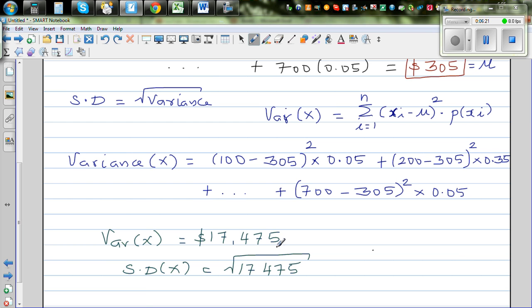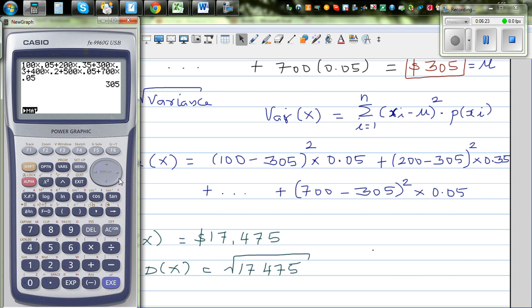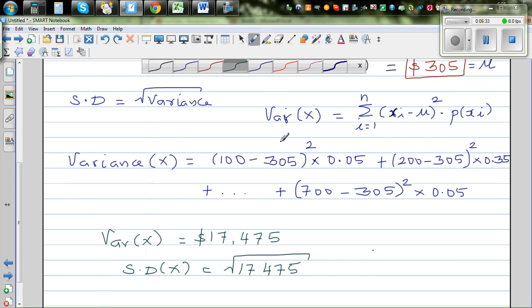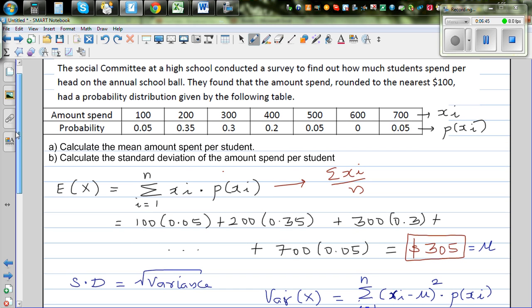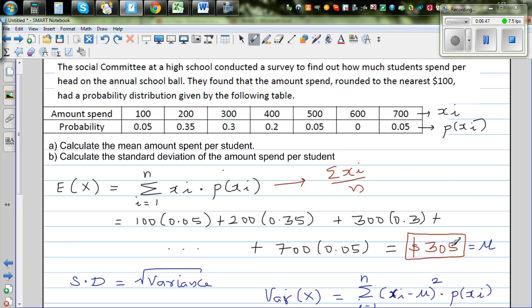So let's use the calculator. Square root of 17,475 will give you $132. So if you want to round it to the nearest dollar, it's $132. So the standard deviation is 132, and the mean of this data is $305.